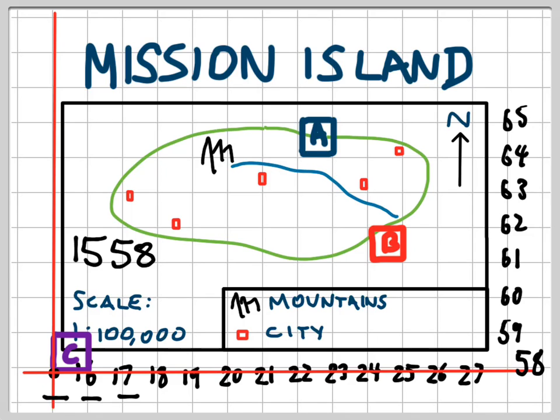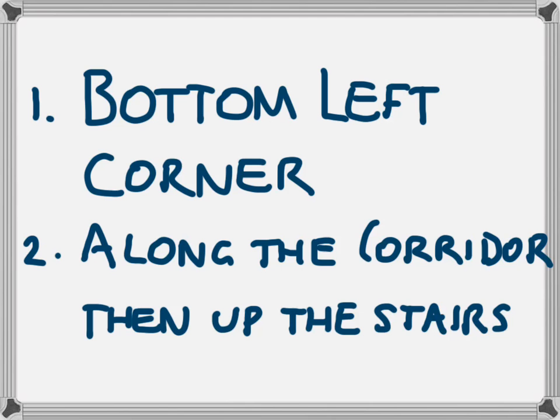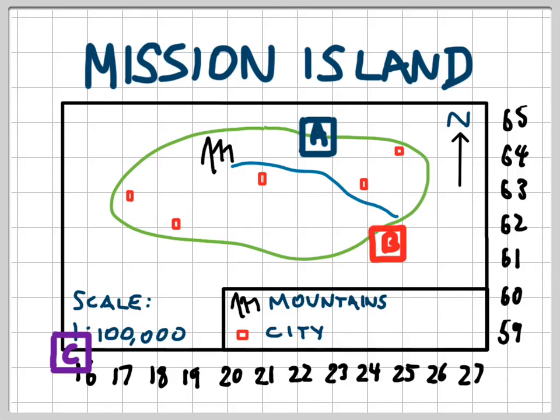So that's how you do an area reference — remember the two rules. Go to the bottom left-hand corner first, then go along the corridor and get your first number, then go up the stairs and get your second number. The area reference will show us an area of the map, but sometimes we want to be more specific than that, so the next video is going to look at a six-figure grid reference, which is a more specific way of locating a position on a map.